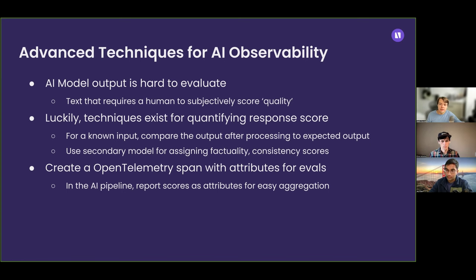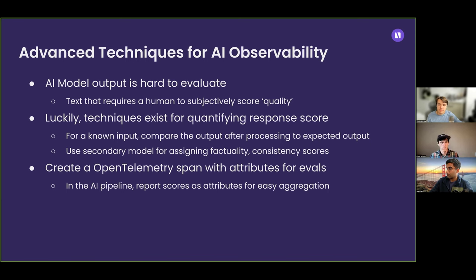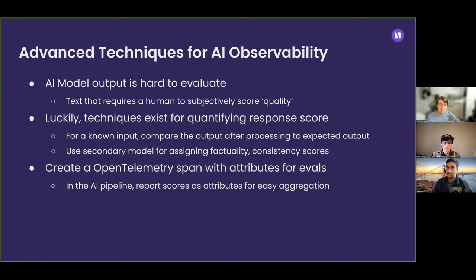One thing that's different about monitoring AI applications compared to web applications is that AI model output is quite difficult to evaluate and monitor. The response from an AI model is typically text-based, and it's hard to evaluate performance because there's no benchmark to compare it against. Luckily, there's a technique called eval scoring where you can use a secondary model to understand the performance of your primary model, or you can define a test dataset with expected outputs that you can use as a benchmark to score your model in production against.